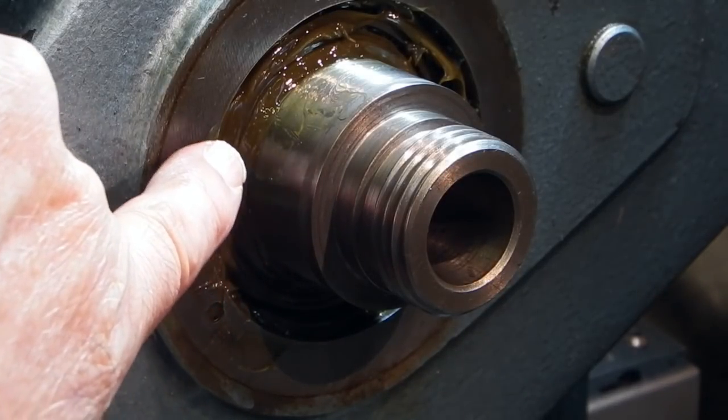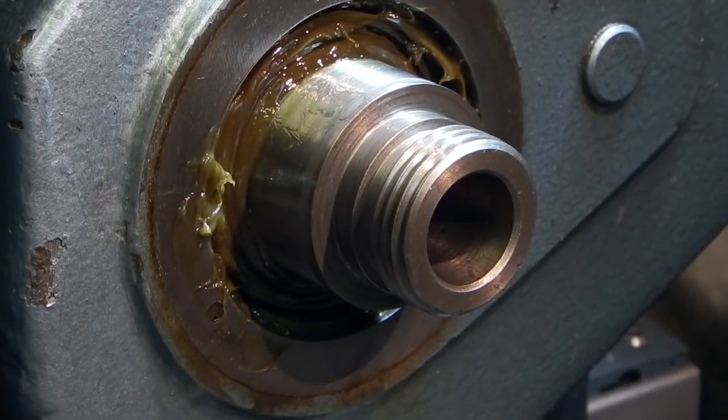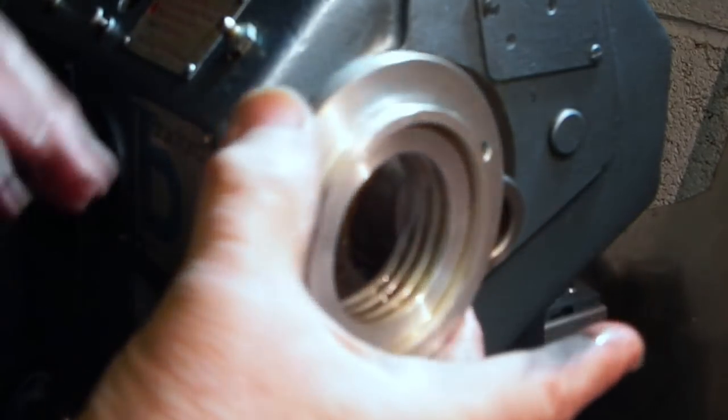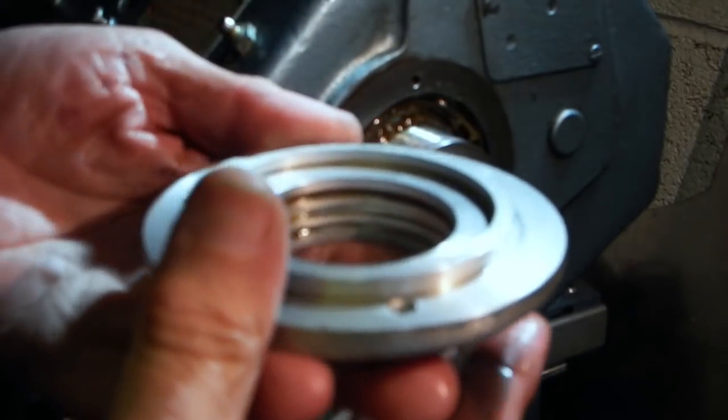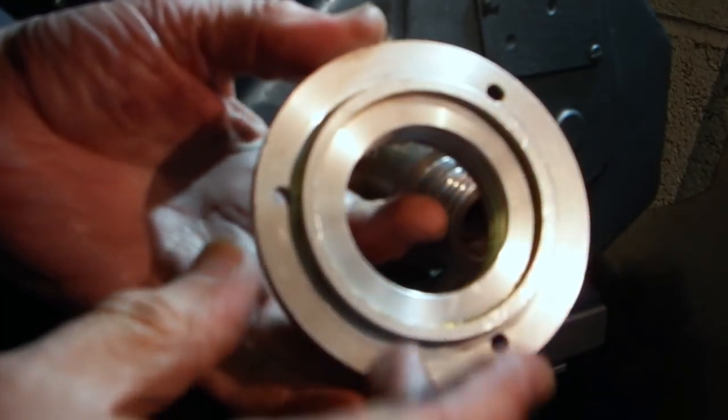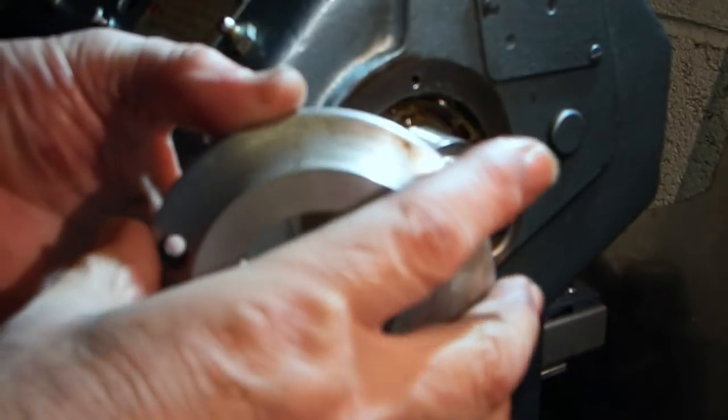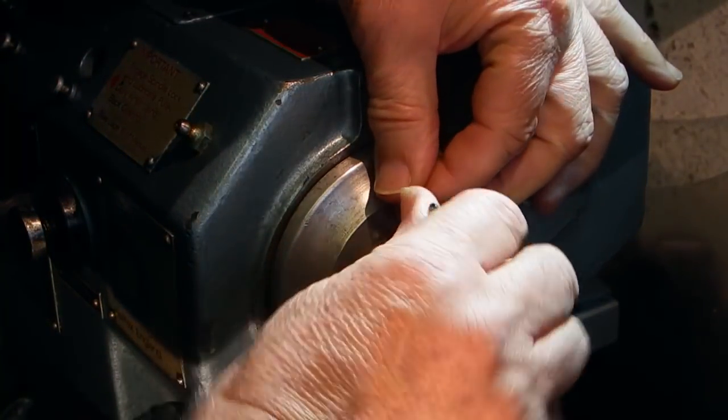So you have one bearing on this side and the other bearing is at the back of the headstock. I've just dropped this on the floor and my luck it landed with the grease down, so this was covered in swarf and bits, so I've had to clean it down. I'll put this back on, let's tighten these screws up.